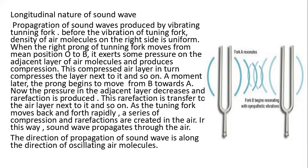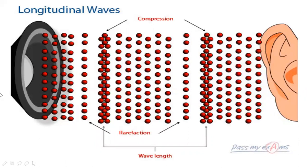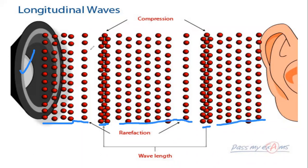The gas molecules are compressed by the tuning fork to produce compression. When a gap is created and molecules are further from each other, rarefaction is produced. The direction of propagation of sound waves is along the direction of oscillating air molecules, so it is longitudinal in nature. Sound travels in the form of compression and rarefaction.